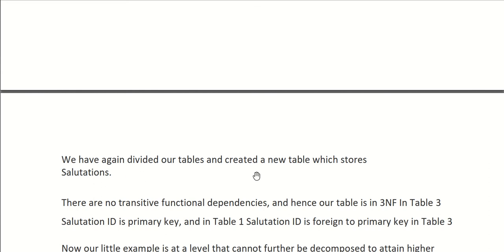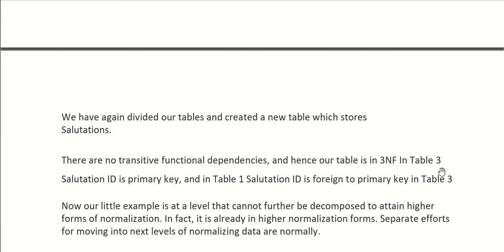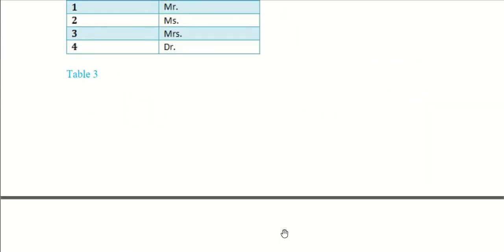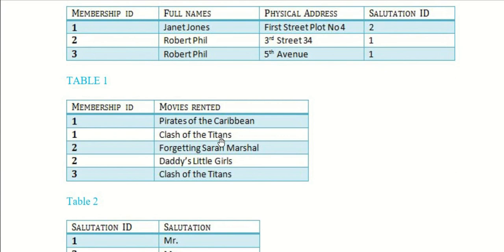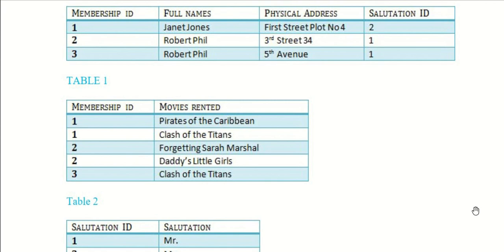We have divided our tables and created a new salutation table. There are no transitive functional dependencies and hence our tables are in third normal form. In the salutation table, salutation_id is the primary key; in the member table, salutation_id is a foreign key. Our example is now at a level that cannot further be decomposed — it is already in higher normalization forms. I hope you understood what normalization is and how to apply it when designing your databases. Thanks for listening and have a nice day!